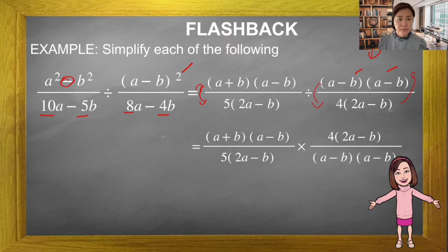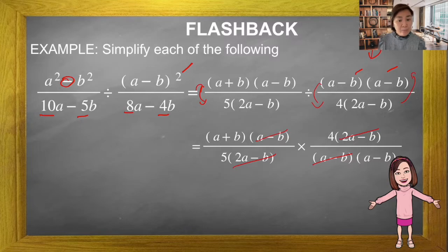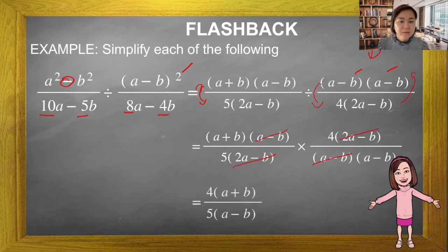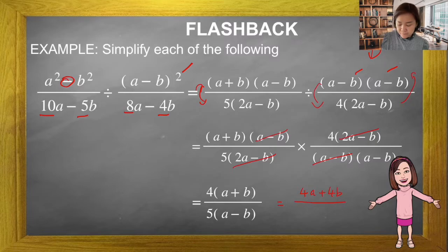We simplify: (a-b) and (a-b) — cut. Then (2a-b) and (2a-b) — cut. No more to simplify, so we multiply the numerator with the numerator and the denominator with the denominator. You can also do expansion: 4(a+b) over 5(a-b), which gives 4a+4b over 5a-5b. Both forms are correct.